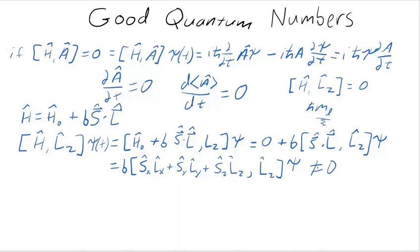And I can make the observation right away that that commutator is not zero. Why do I think so? Well, because I have the l sub z operator and the l sub x operator, and I know that they don't commute.